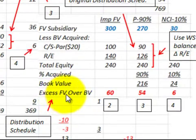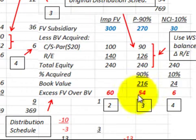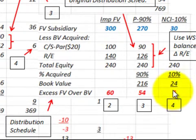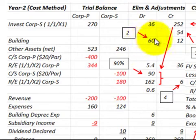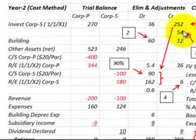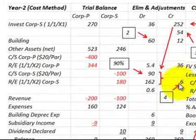Next, we distribute the excess of fair value over book value. The total amount is 60,000 dollars, due to an increase in the building. The parent's portion is 54,000 (90%) and the non-controlling interest is 6,000. On the worksheet, we debit the building account for 60,000, credit the investment in the subsidiary for 54,000, and credit retained earnings for the subsidiary for 6,000.